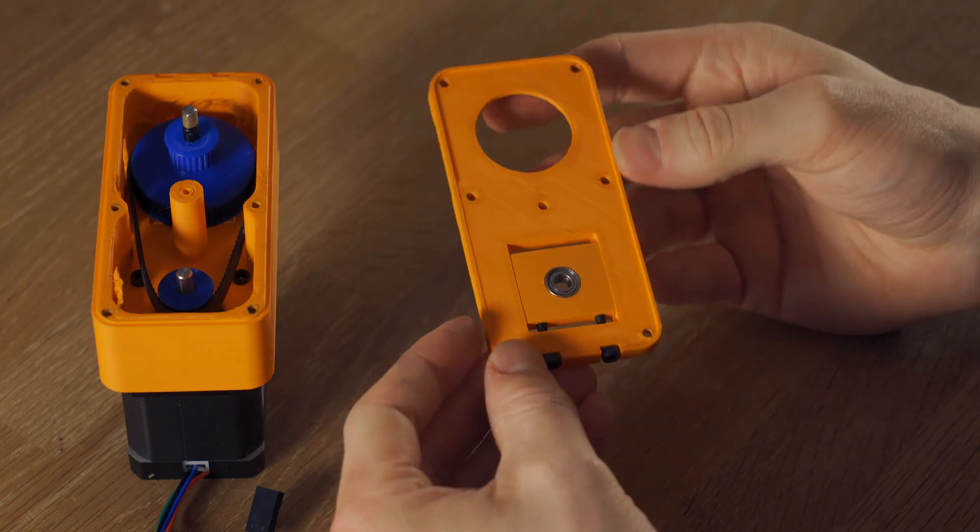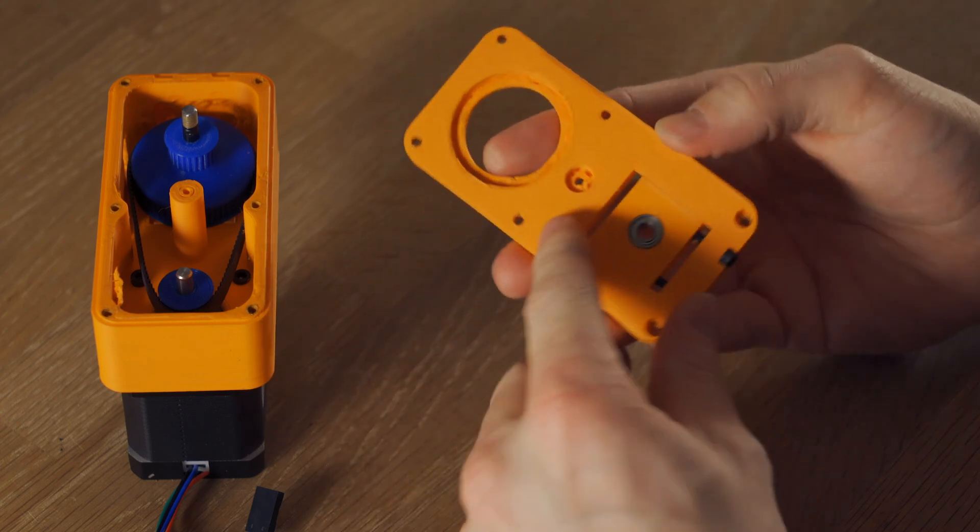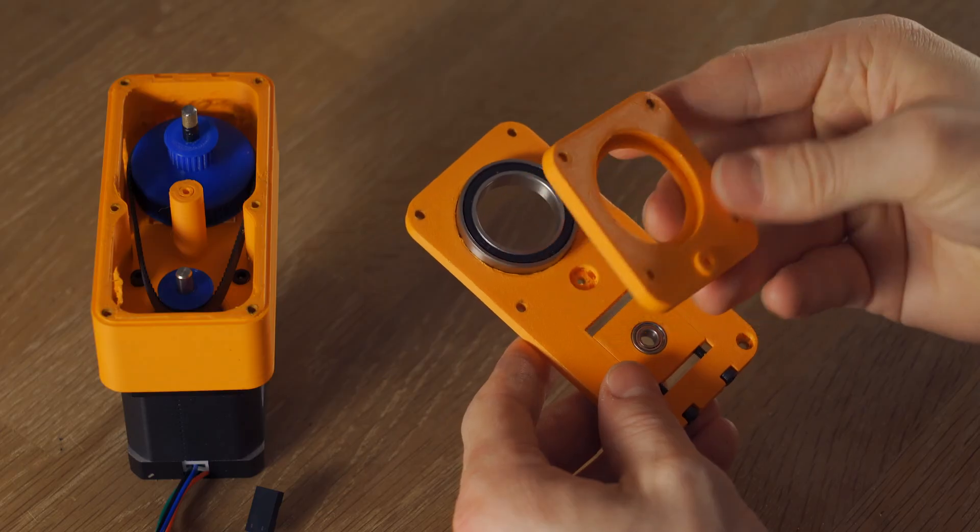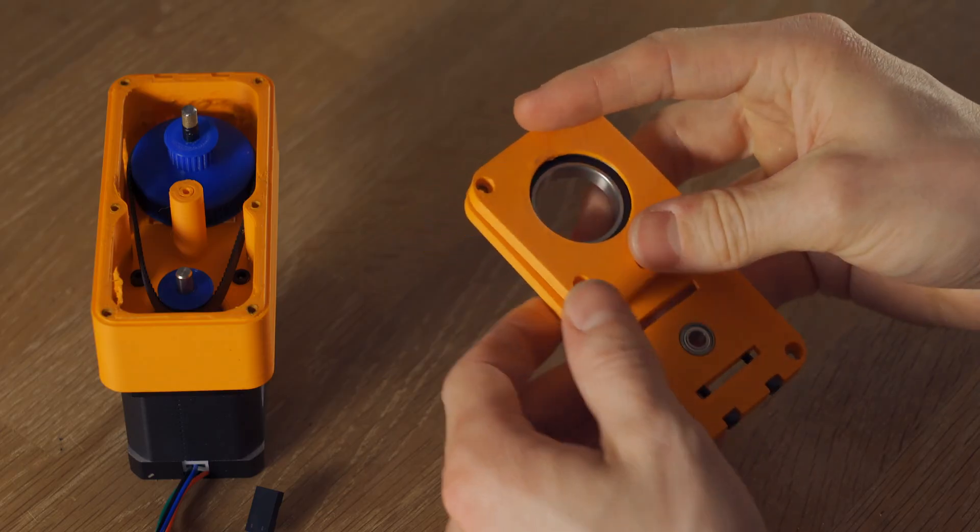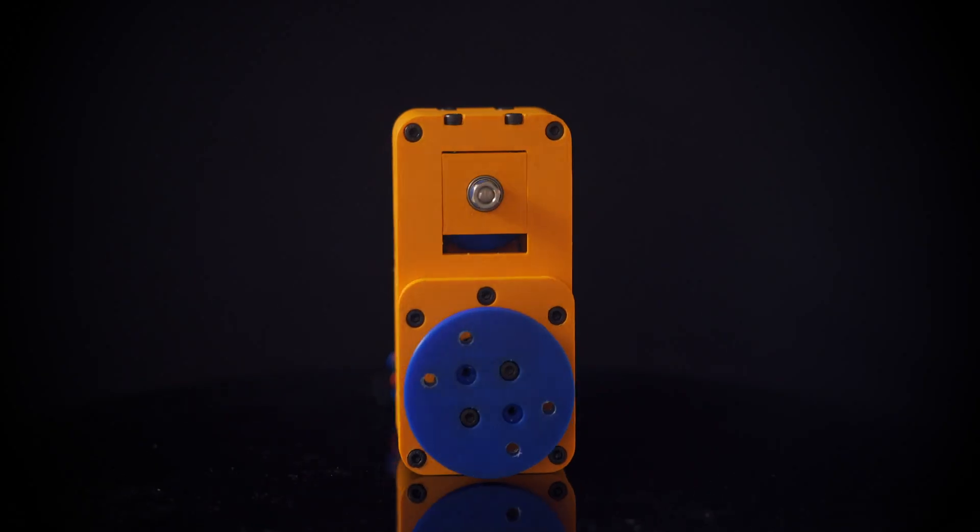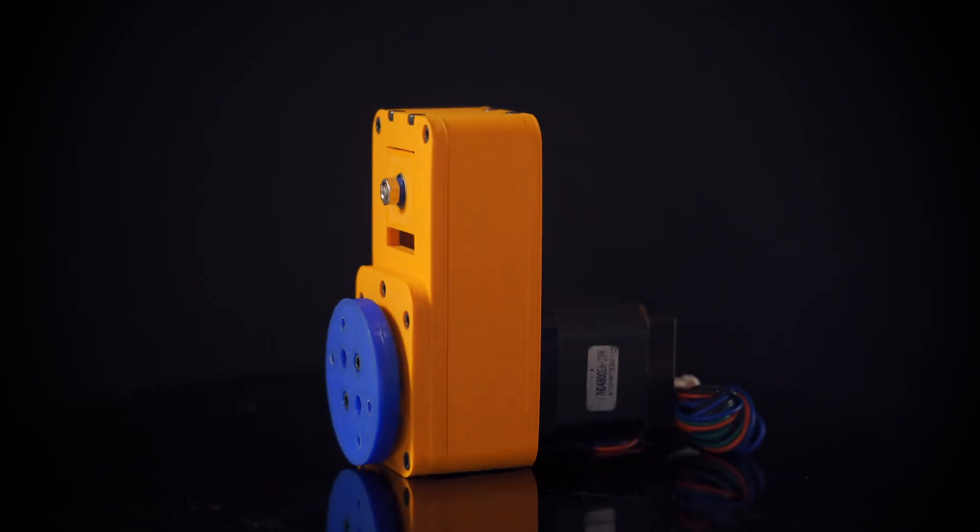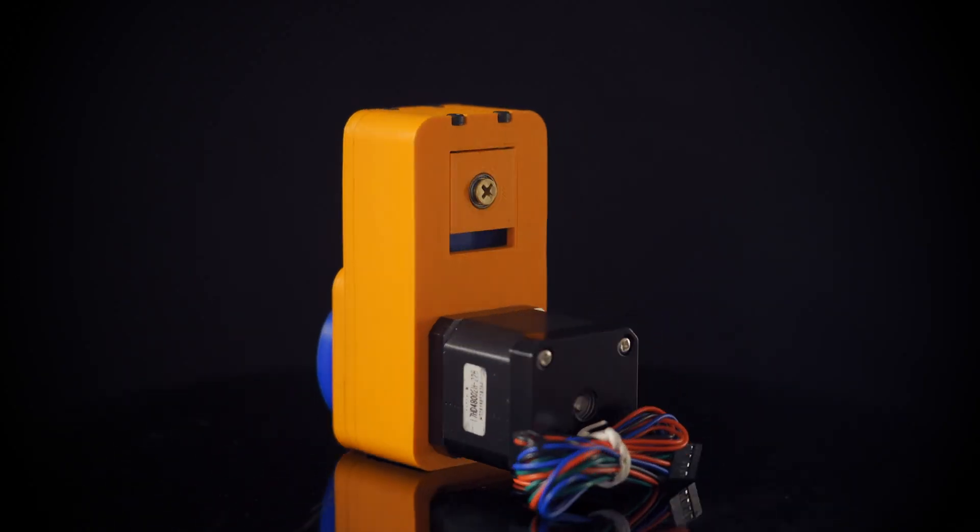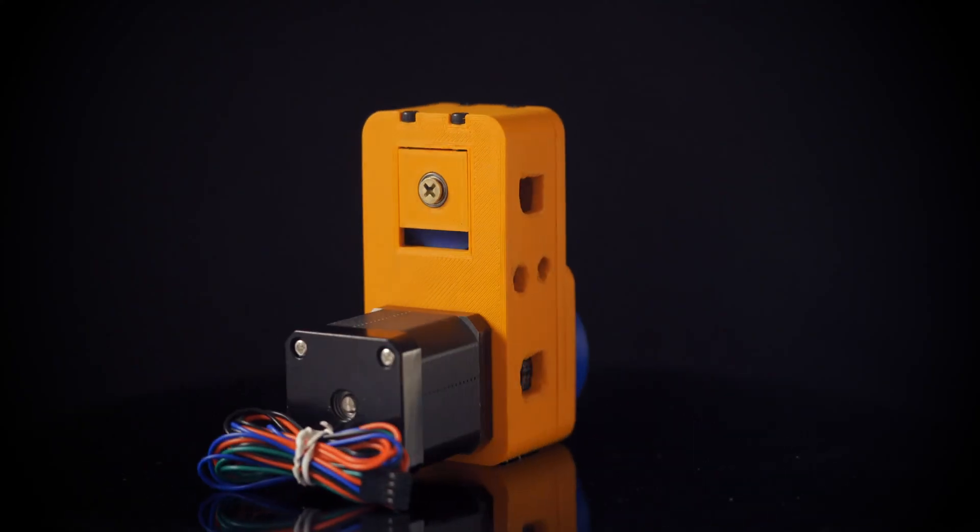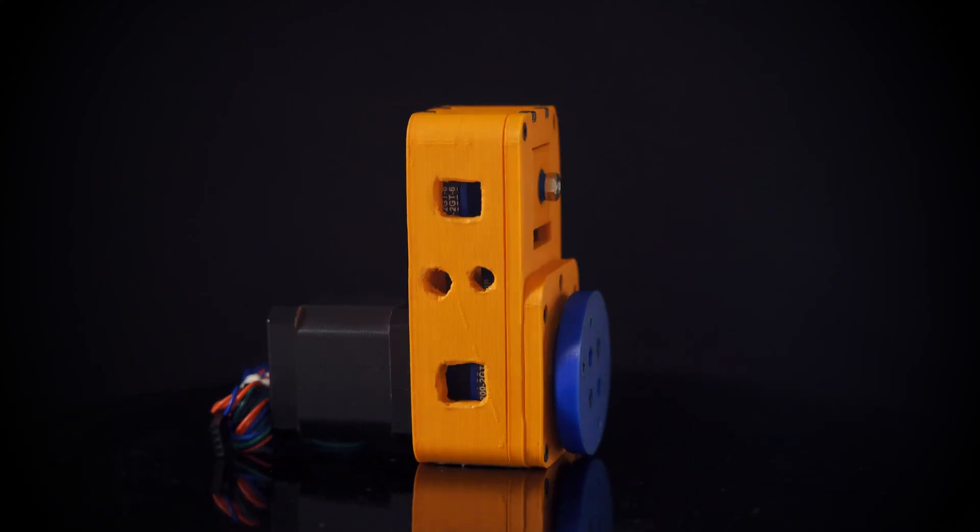Lastly, I didn't exactly nail the tolerances on the large ball bearing, so I also had to do some modifications here. But for the sake of getting to that first prototype, it was a much better solution to make these modifications than to reprint everything trying to make it perfect in the first run.